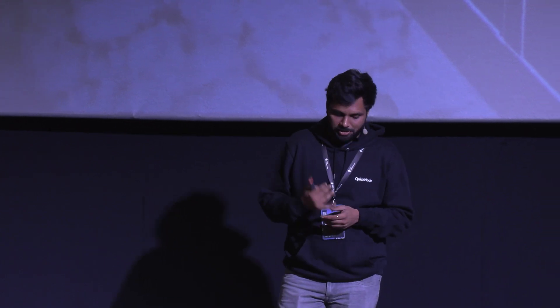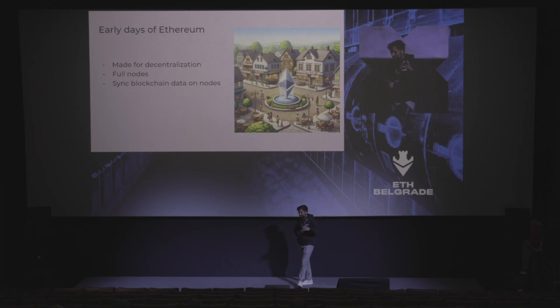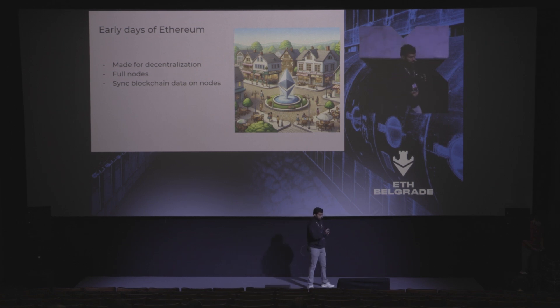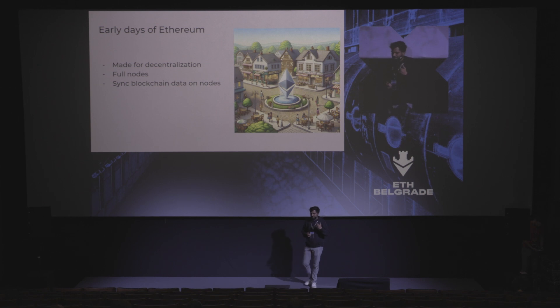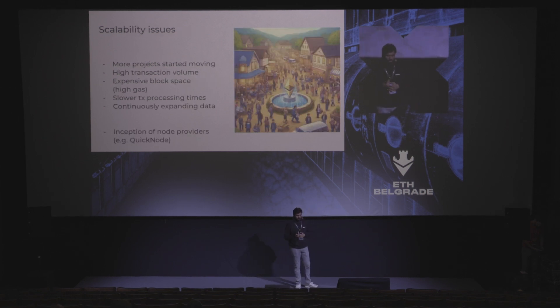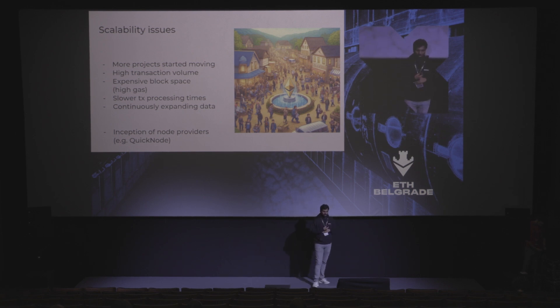Let's understand this with the help of an analogy. Consider Ethereum as this new and emerging small town where things are done somewhat differently, and people are liking it, people are starting to move in. Once people start liking it, it starts getting crowded. And once a town starts getting crowded, once the population increases, it kind of becomes overwhelming on the town and puts a burden on the services of the town. That's what happened with the Ethereum network as well.